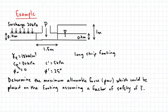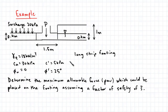We're given two sets of soil parameters: an undrained cohesion of 30 kPa and undrained angle of friction of 0, as well as a drained cohesion of 5 kPa and a drained angle of friction of 25 degrees. This means we'll need to consider both an undrained analysis and a drained analysis.